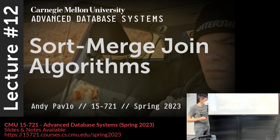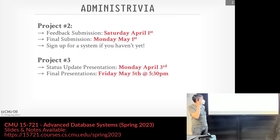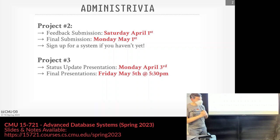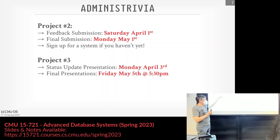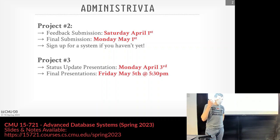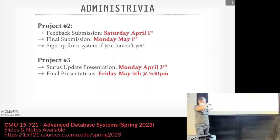Let's jump into this. On the docket: if you haven't signed up for a system for project two, please do that. I added some new suggestions, including another database. If you haven't been approved yet, please reach out. For project three, the status update is due April 3rd. The final presentation date is May 5th at 5:30 PM — we can do it in here and then get pizza.